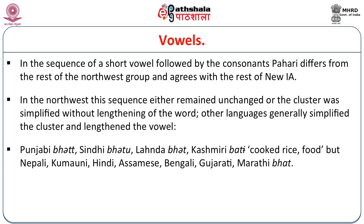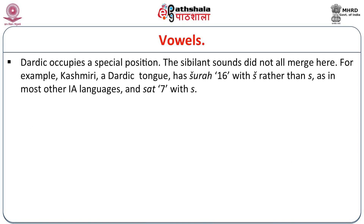For example: Punjabi — bhat, Sindhi — bhatu, Lahanda — bhat, Kashmiri — bhati; whereas Nepali, Kumauni, Assamese etc. have bhat. Dardic languages occupy a special position — the sibilant sounds did not all merge here. For most other Indo-Aryan languages, sat 'seven' merged with sa. Also, voiced aspirated stops merged with unaspirated stops in Dardic: Kashmiri — gur (horse), but Hindi — ghoḍa; Kashmiri — dood, but Hindi — doodh.